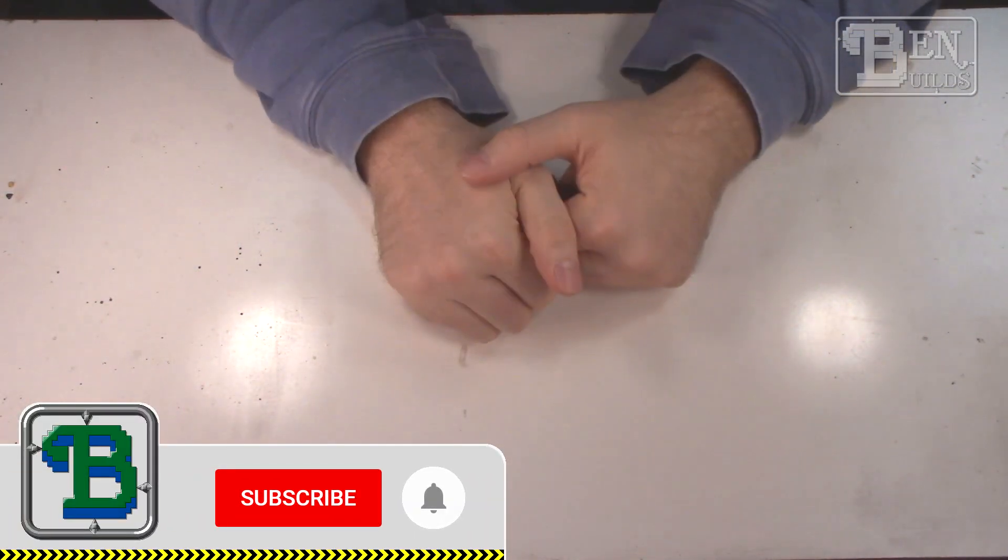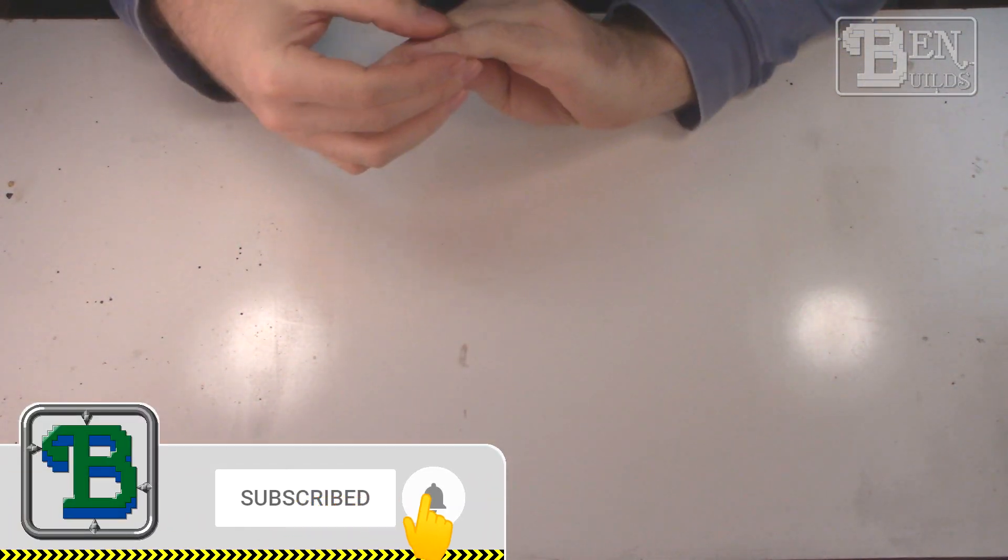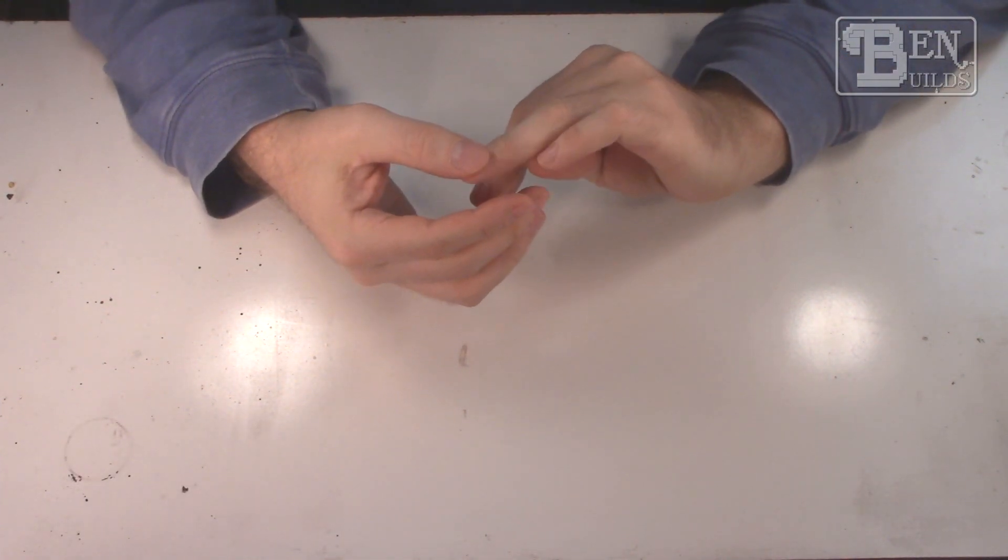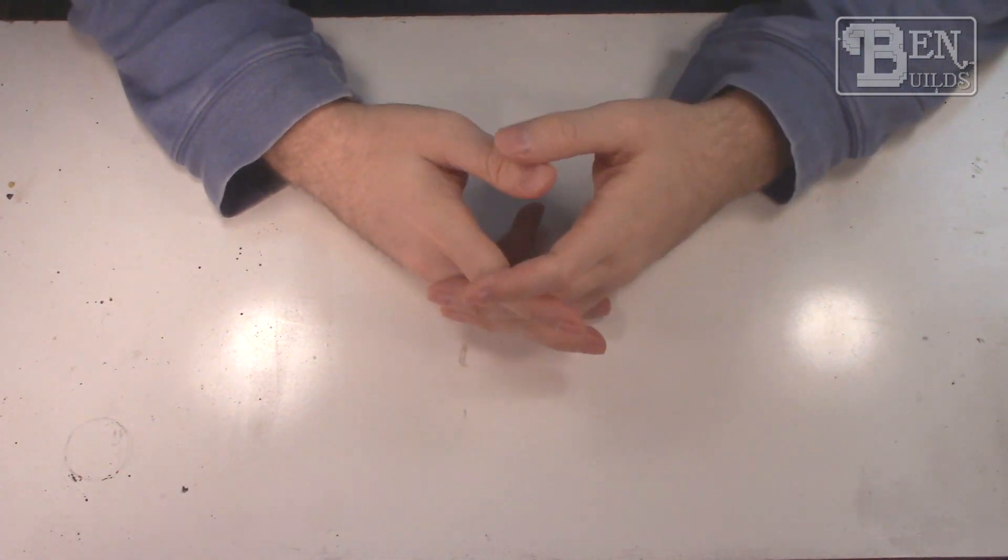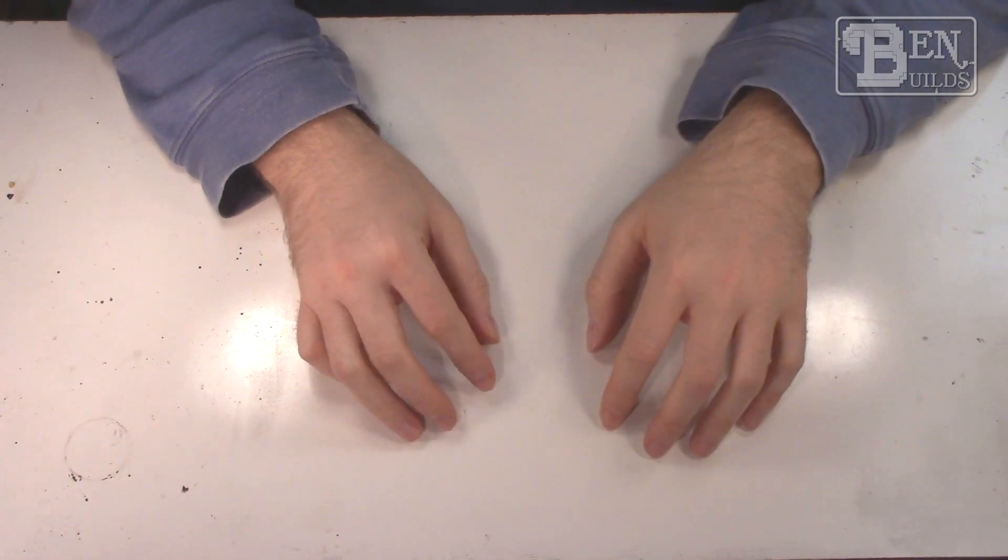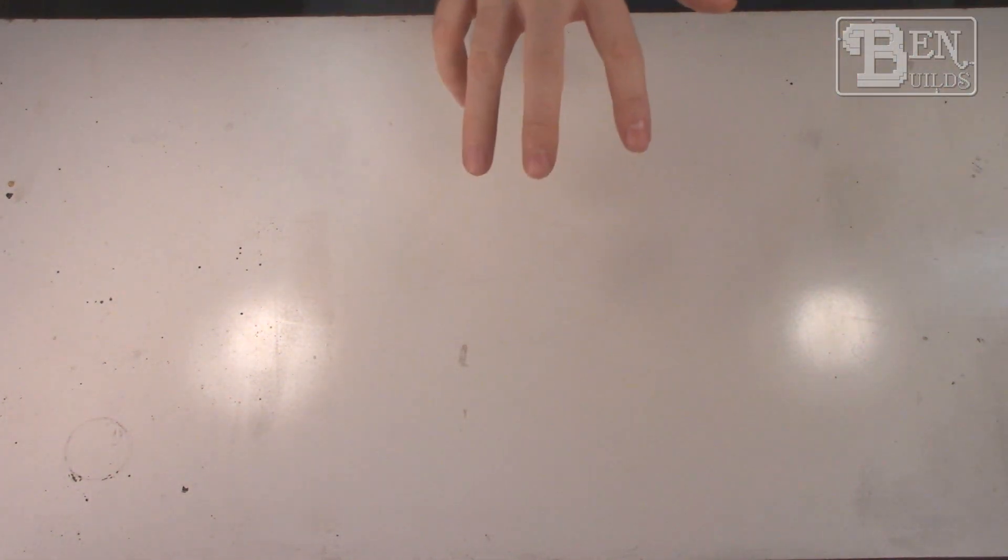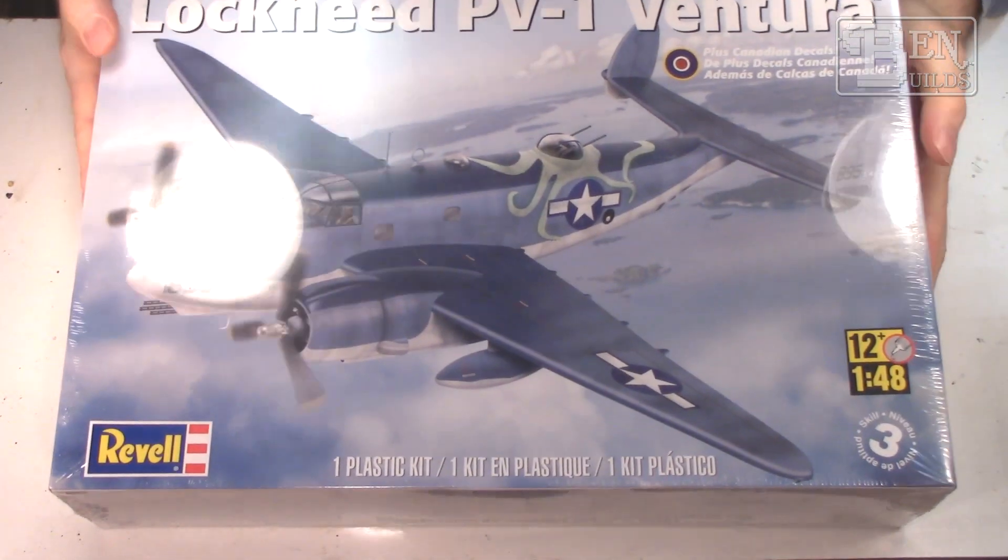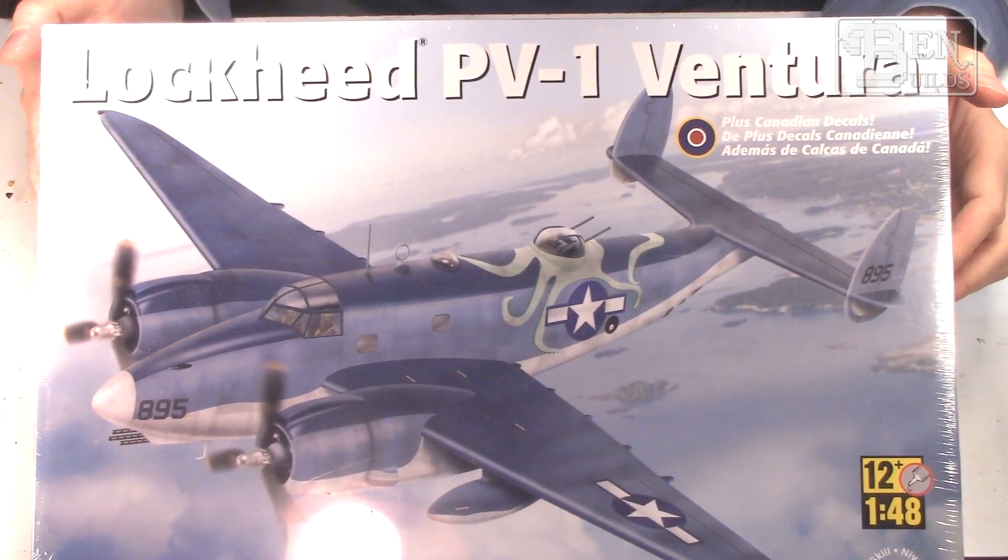What's going on everybody, my name is Ben and welcome back to the bench. We are here with a brand new episode and a new season of Military Mondays. We're going to be working with a 1/48 scale PV-1 Ventura, the Revell kit that I picked up a couple weeks ago. I want to show you what's in the box.